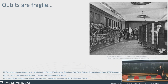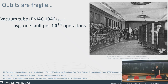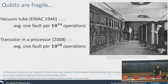As we know, qubits are really fragile. It's interesting to compare their error rates to classical counterparts. Back in the day with the ENIAC machine in 1946 — one of the first actually programmable electronic computers — they experienced an error rate of one fault per 10^14 operations. Effectively, a vacuum tube would burn out every day or every other day. And nowadays, or as of 2008, you have error rates of about one fault per 10^28 operations, so an error rate of 10^-28 for transistors.